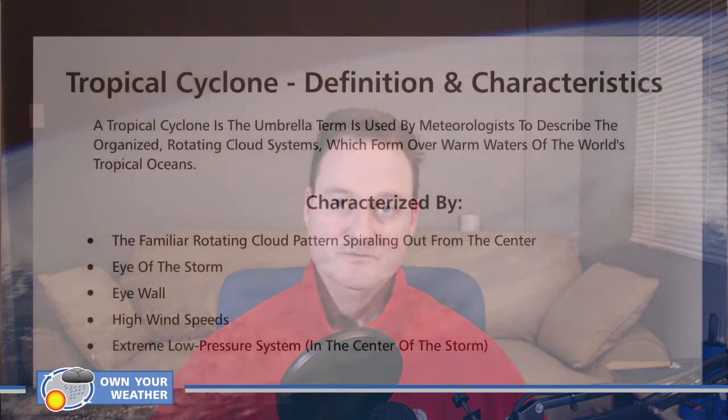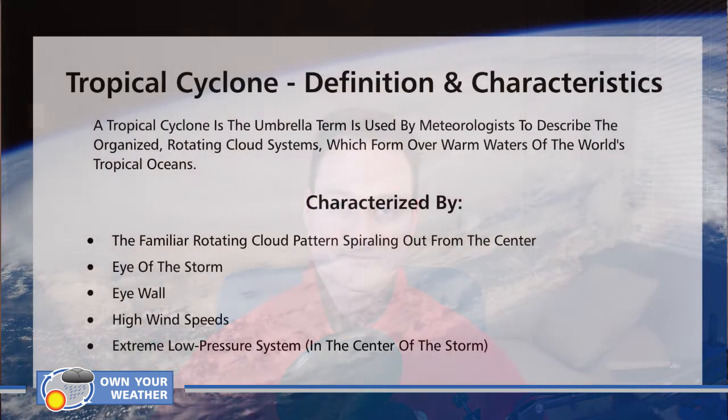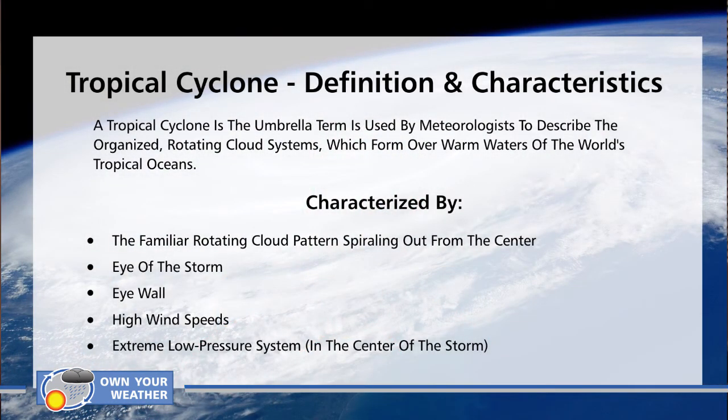So what is the difference? The only difference is where in the world these weather phenomena occur. A tropical cyclone is the umbrella term used by meteorologists to describe the organized rotating cloud systems which form over the warm waters of the world's tropical oceans.